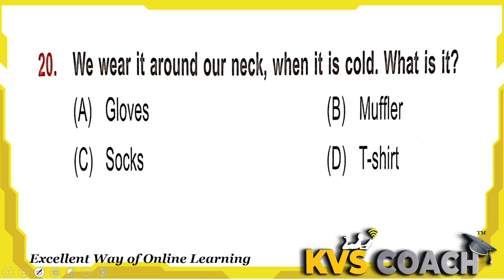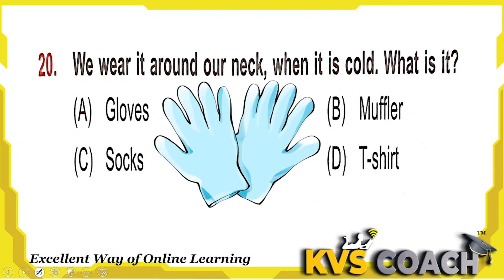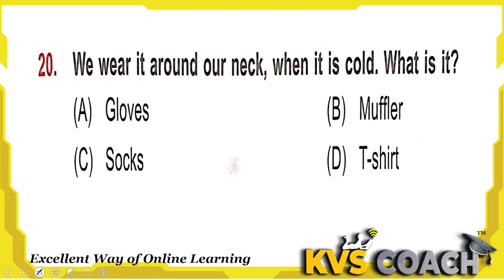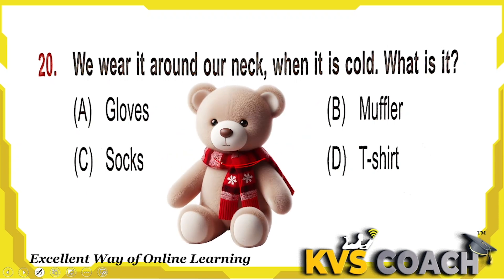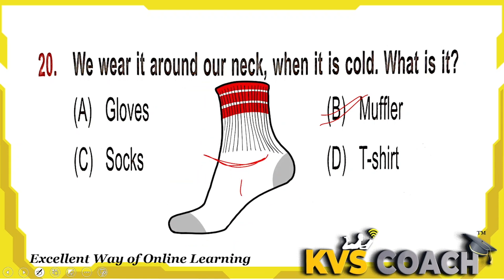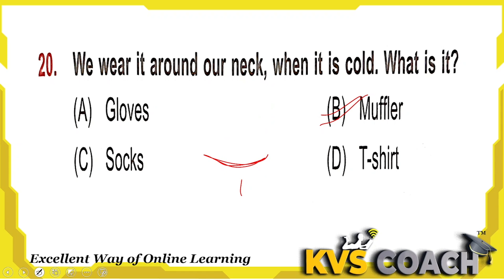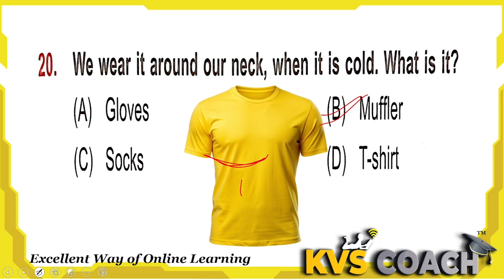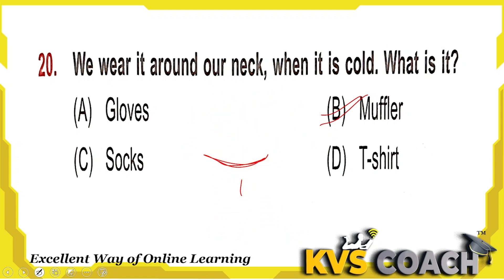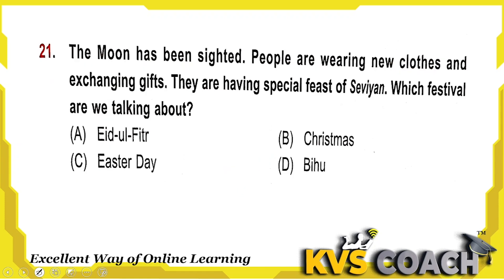Next: we wear it around our neck when it is cold — what is it? Gloves are worn on hands, not the neck. A muffler is worn around the neck. Socks are worn on legs. A T-shirt is worn on the body. So what we wear around our neck when it is cold is a muffler. Option B is the right answer.